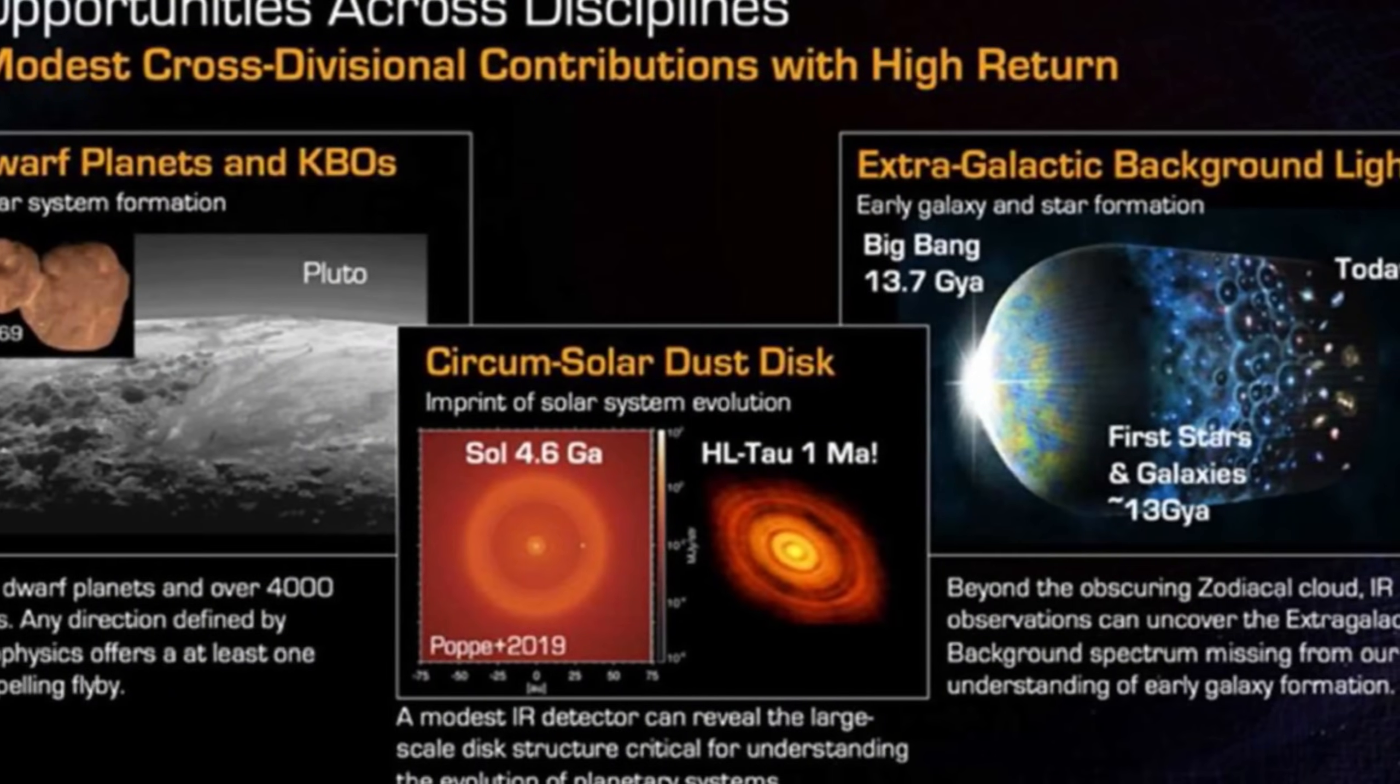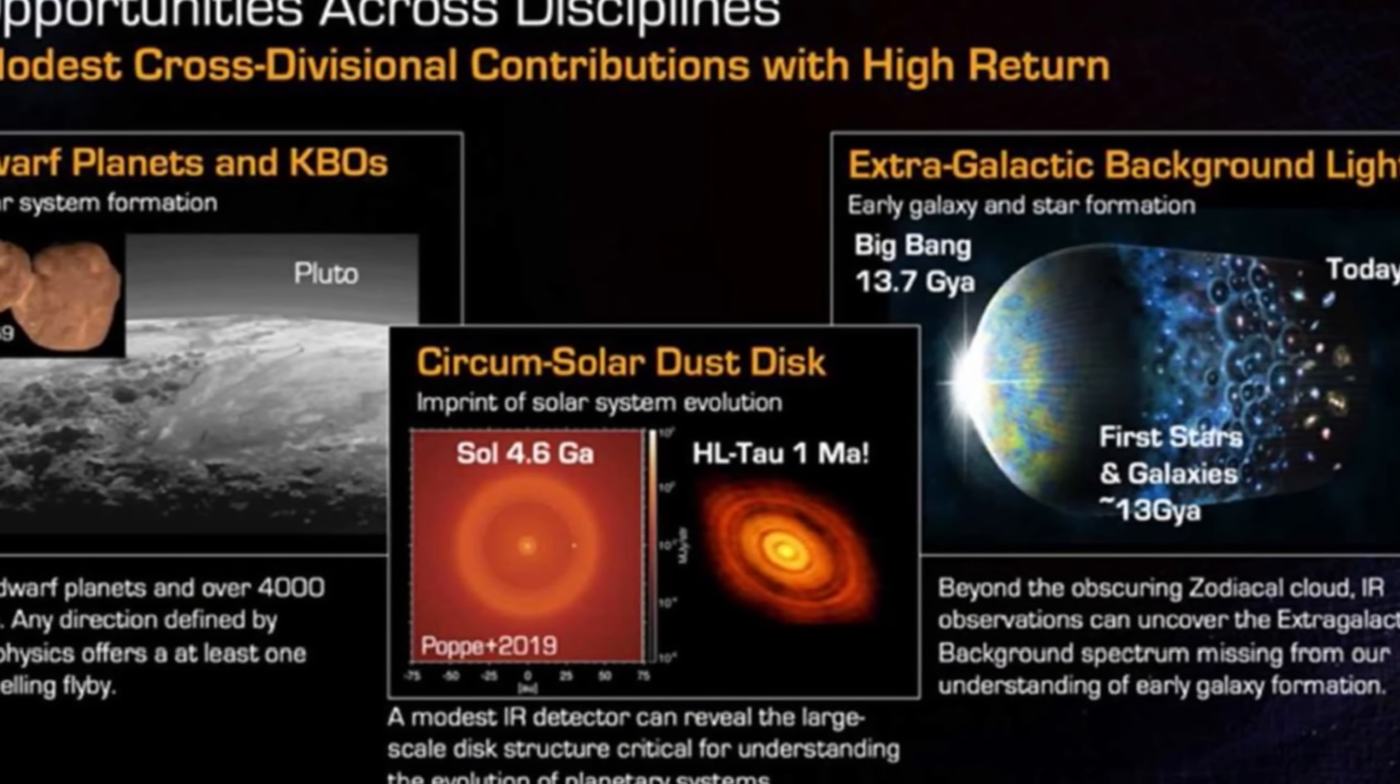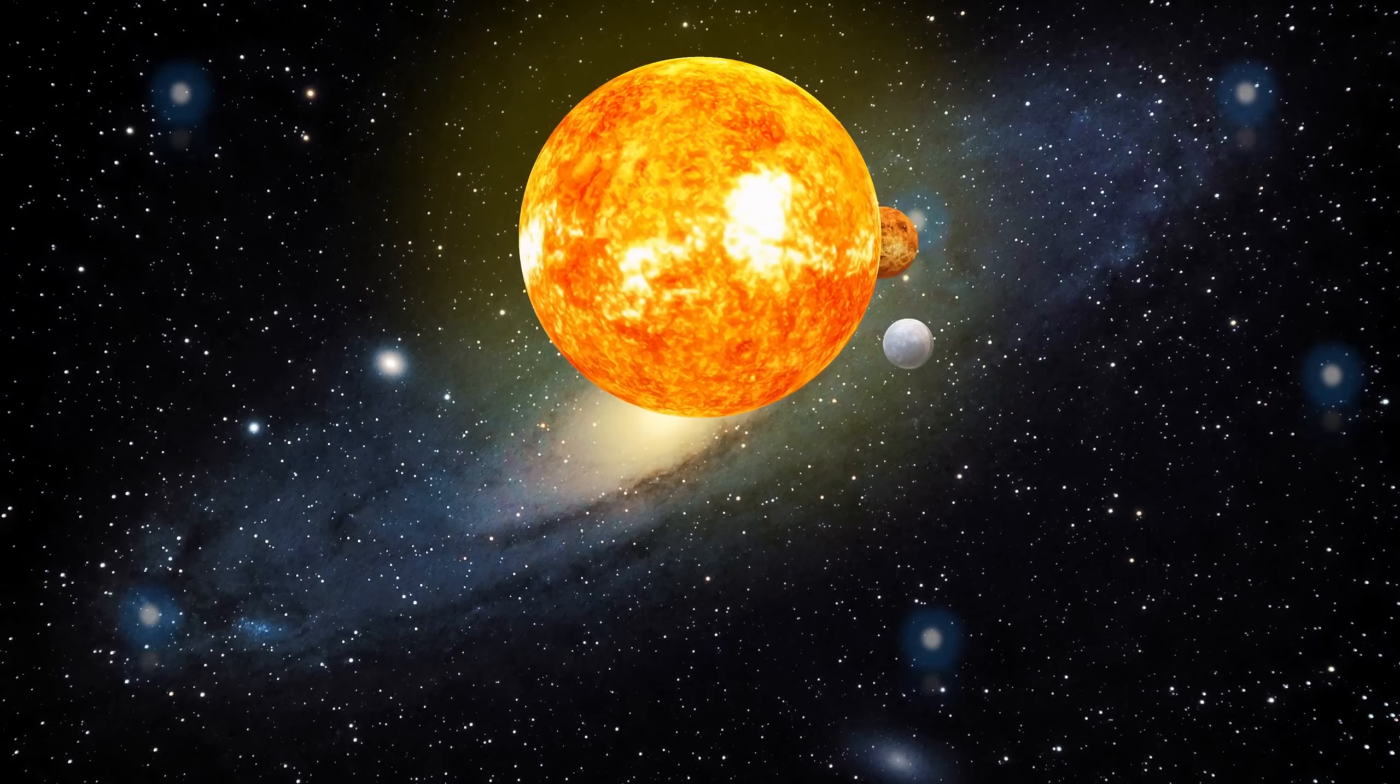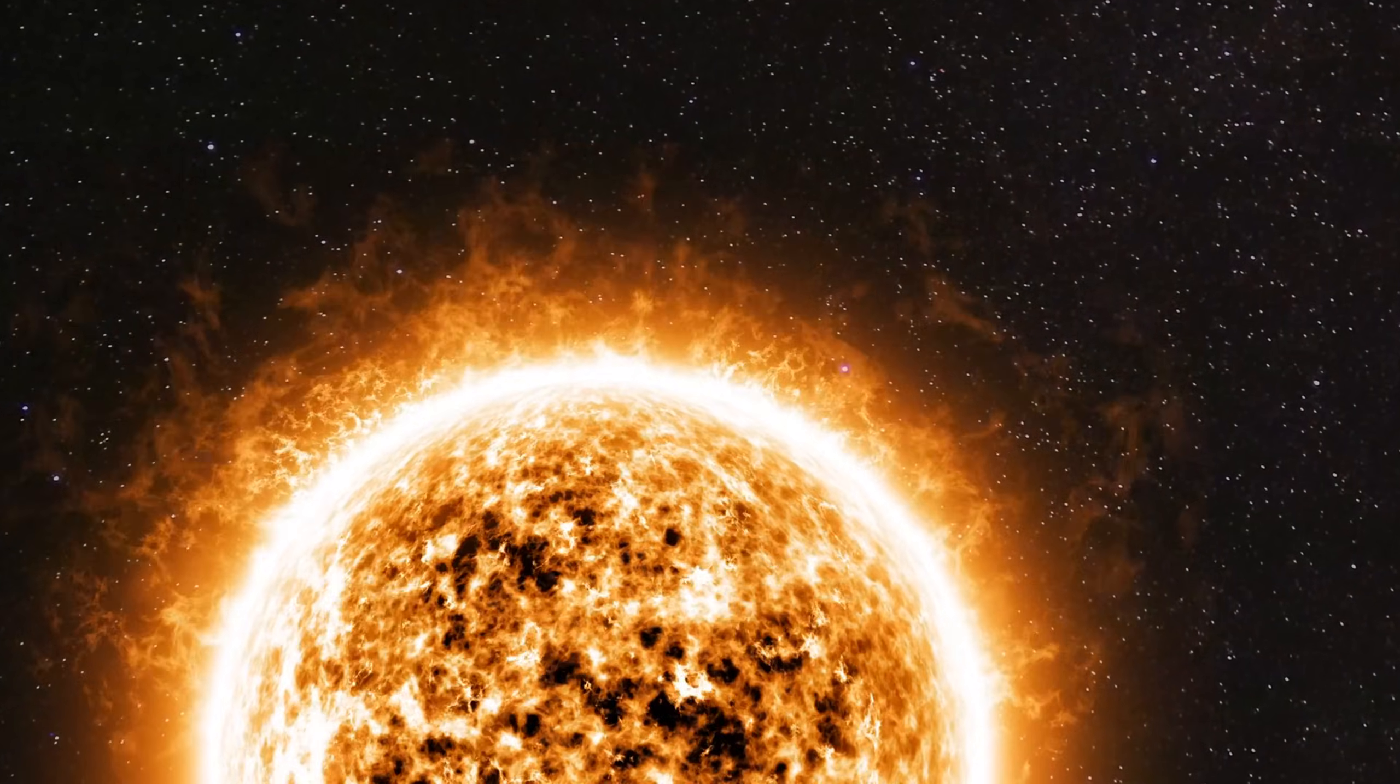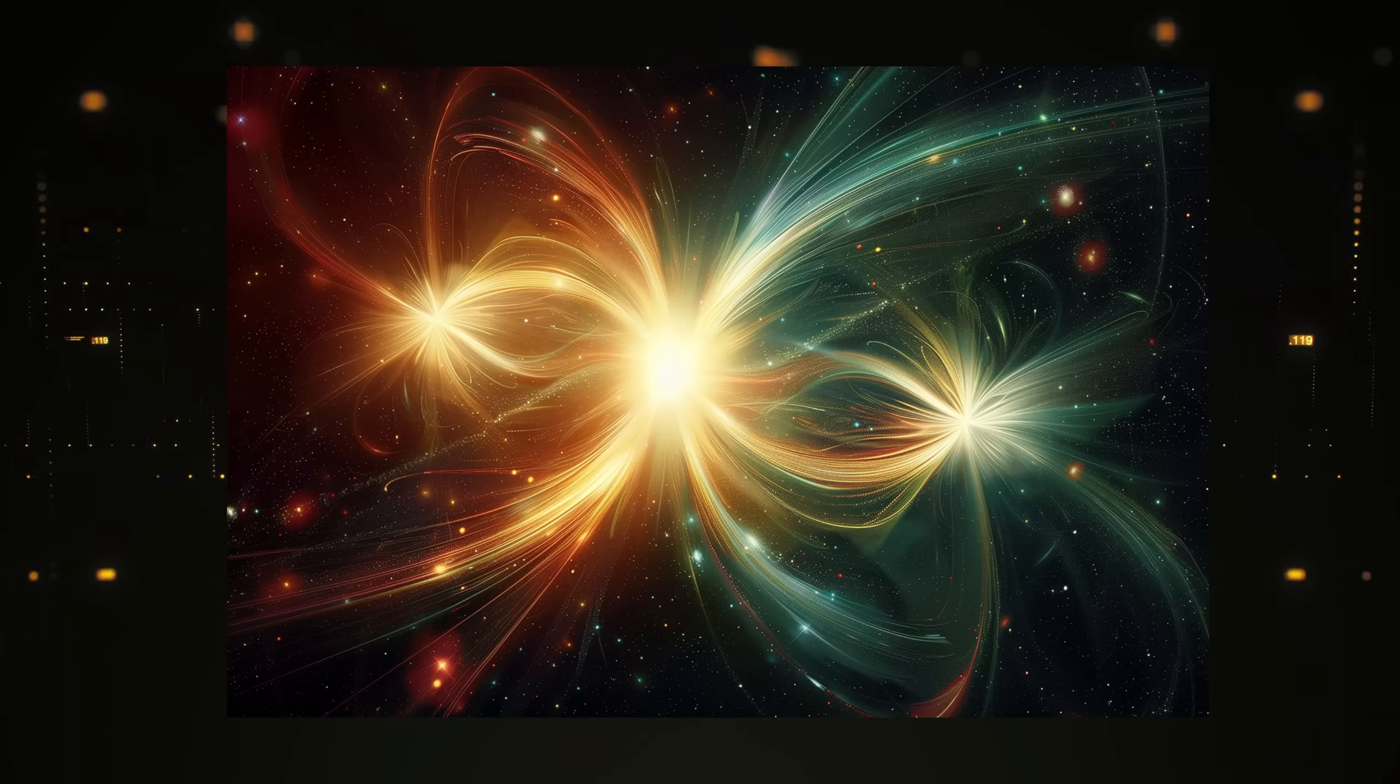As Voyager neared the heliopause, it identified a cosmic ray-bound layer containing a unique blend of solar and galactic cosmic rays. In this area, Voyager observed a sharp decrease in solar particles alongside a surge in high-energy particles from interstellar space, signaling the interaction of solar and galactic forces. This previously uncharted cosmic ray layer revealed that the Sun's protective influence doesn't abruptly cease, but rather fades gradually, forming a chaotic boundary where particles mix in intricate ways.